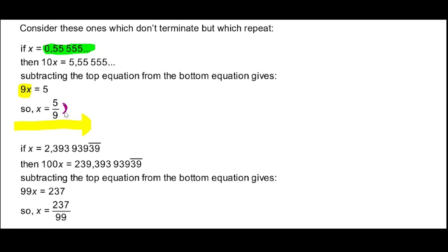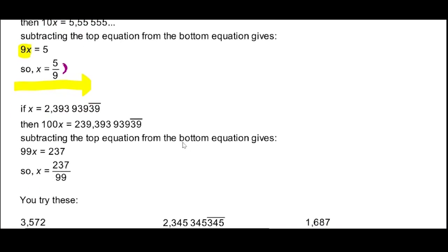Now one with two repeating digits: 2.393939... We let it be x, and because there are two repeating digits we multiply by 100. So 100x = 239.393939... and x = 2.393939... Subtracting, 99x = 237, so x = 237 over 99. Divide 237 by 99 on a calculator and you get 2.3939... We've written this rational repeating decimal as a ratio of two whole numbers.